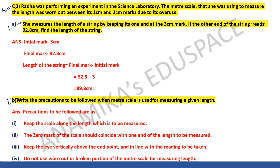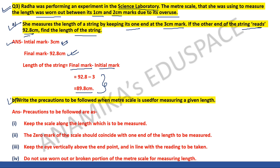Question number three, part A: Radha was performing an experiment in a science laboratory. The meter scale she was using was worn out between its 1 cm and 2 cm marks due to overuse. She measures the length of a string by keeping its one end at the 3 cm mark. If the other end of the string reads 92.8 cm, find the length of the string. The initial mark was 3 cm and the final mark is 92.8 cm. Length of string equals final mark minus initial mark, which gives 89.8 cm.